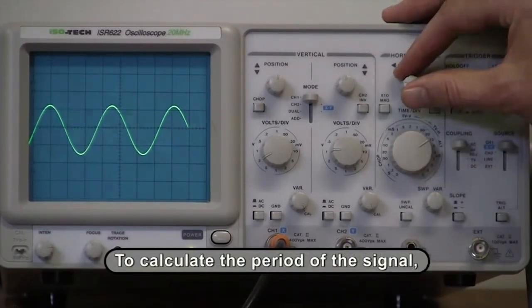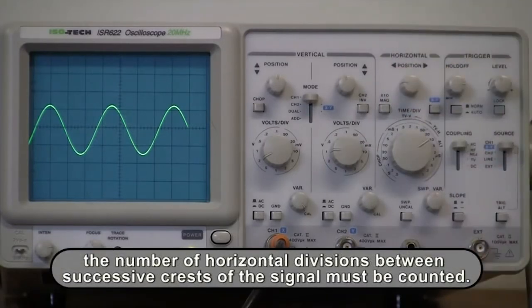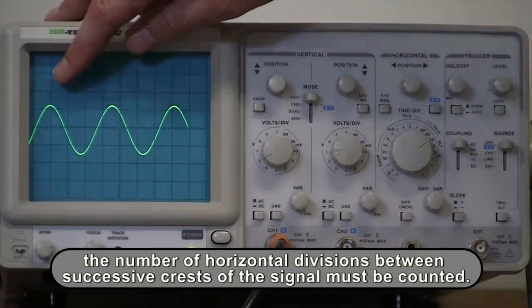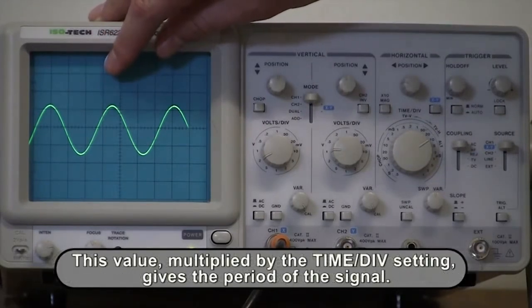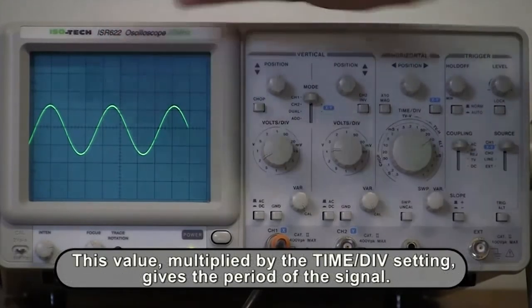To calculate the period of the signal, the number of horizontal divisions between successive crests of the signal must be counted. This number, multiplied by the time per division setting, gives the period of the signal.